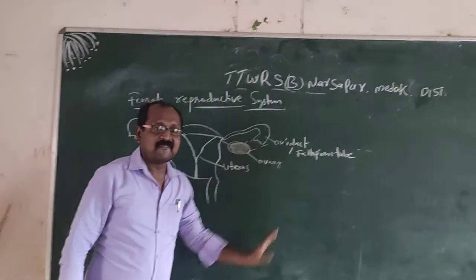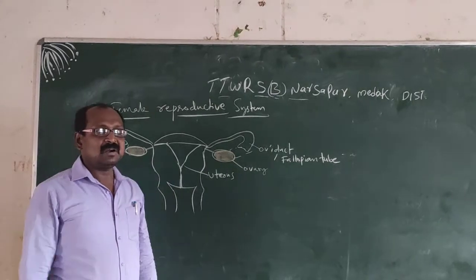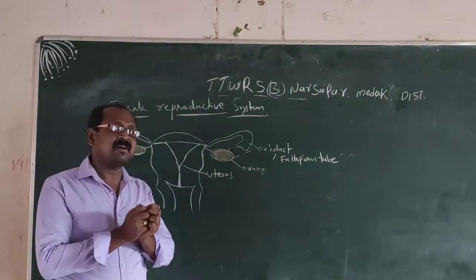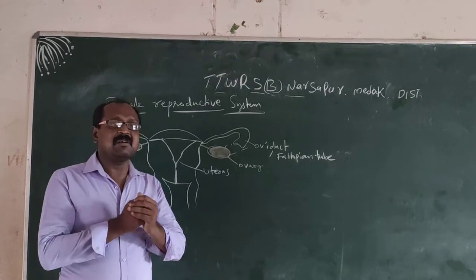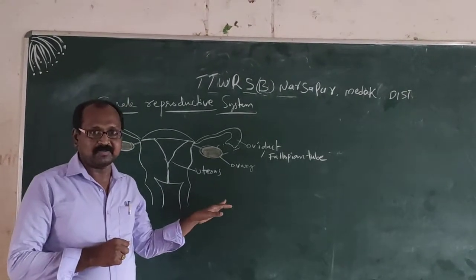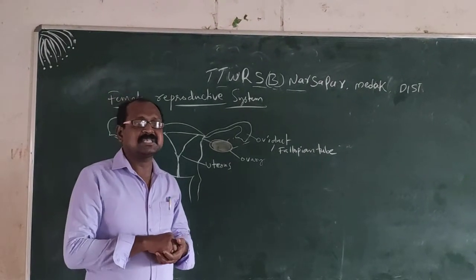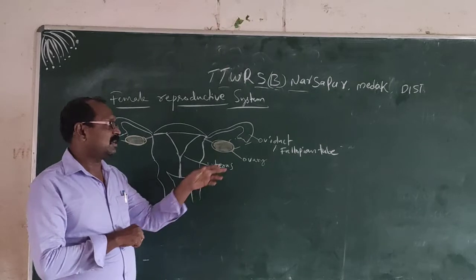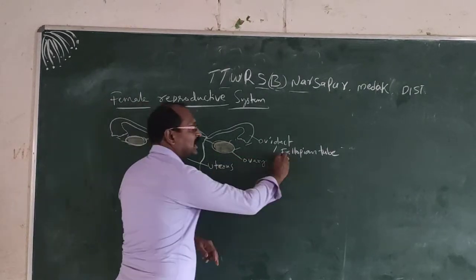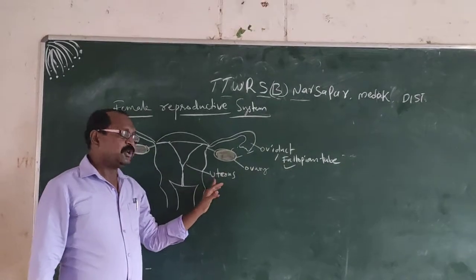Number two: the fallopian tube, where fertilization occurs. Fertilization is the fusion, or mixing, of the sperm and ovum. The combining of the sperm and ovum is called fertilization, and it occurs in the fallopian tube.